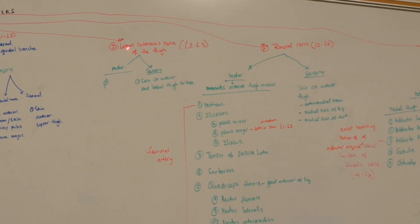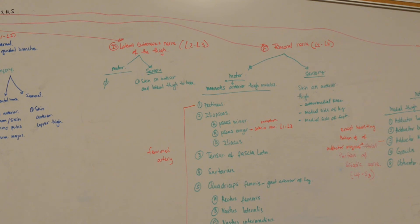For the femoral branch of the genitofemoral nerve, it will innervate the skin of the anterior upper thigh. The lateral cutaneous nerve of the thigh has no motor innervations. It is mainly sensory, innervating the skin of the anterior and lateral thigh to the knee.